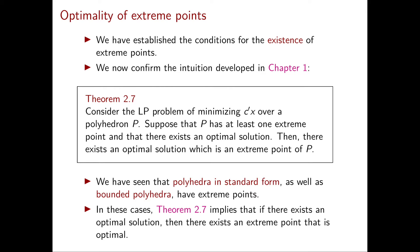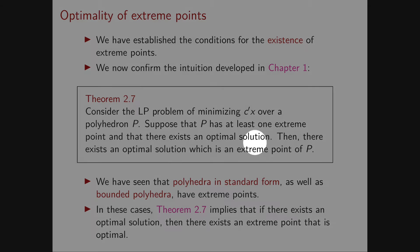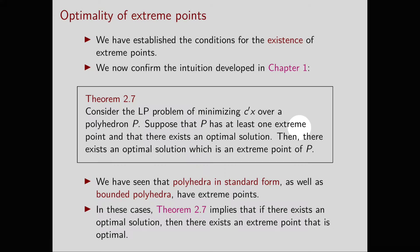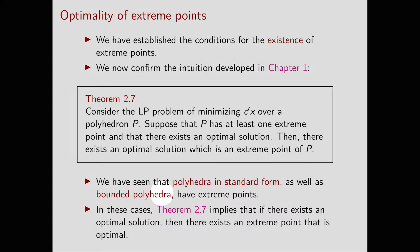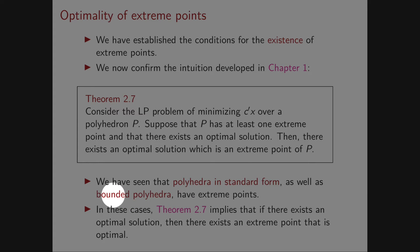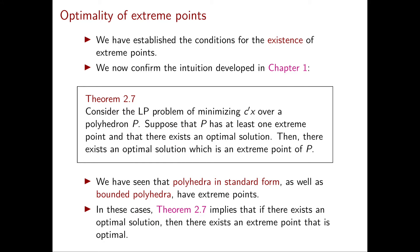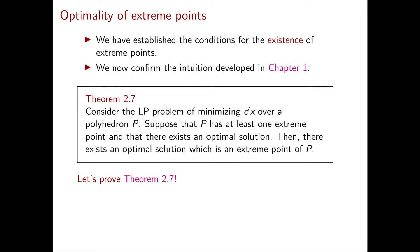My second comment is about some direct consequences of this theorem. Namely, in this theorem, we are asking that P has at least one extreme point. We've already seen in the previous video some classes of polyhedra that do have extreme points — namely, polyhedra in standard form and polytopes, as long as they're non-empty. So in these cases, Theorem 2.7 implies that if there exists an optimal solution, then there exists an extreme point that is an optimal solution.